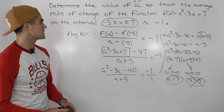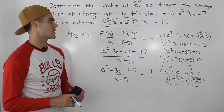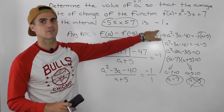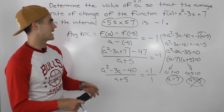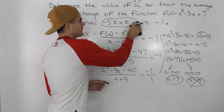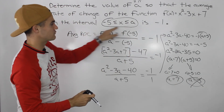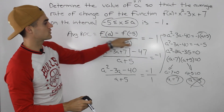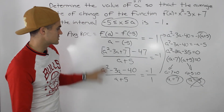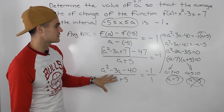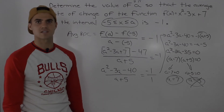So that's a pretty tricky question. Usually when working with average rate of change, you're given the function and the interval and you find the average rate of change. In this case we had to go backwards — we had this variable a in the interval, made an expression for the average rate of change, set it equal to negative 1 as given, cross multiplied, and solved to get a = 7.